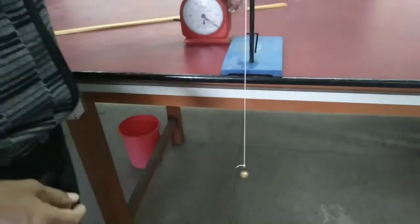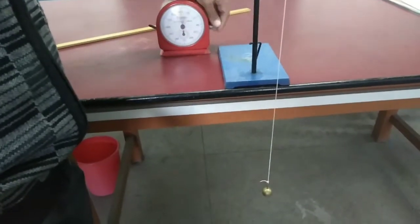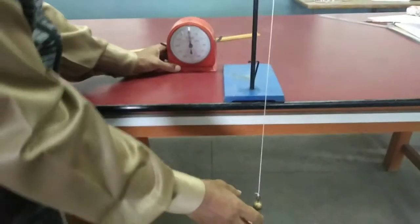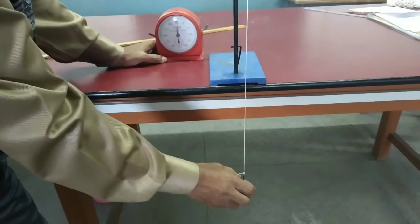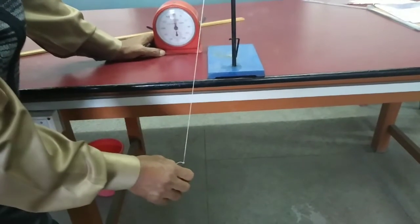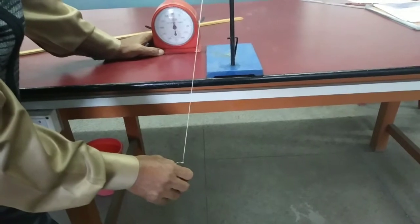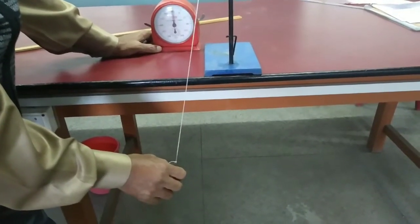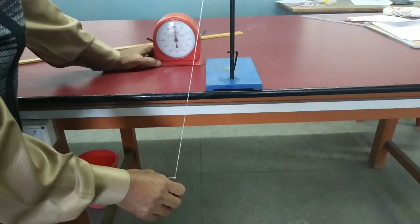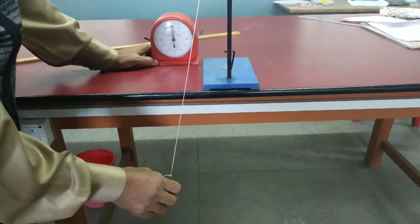Now this effective length 70 cm will be used to find the time period. Now for time period, push the bob to one side 5 to 6 cm and record the time period for 20 oscillations.